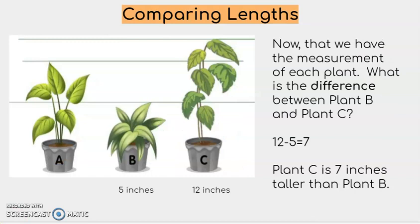Now you'll notice that we have the measurements for plants B and plant C. Plant B is 5 inches, while plant C is 12 inches long. So now that we have the measurement of each plant, what is the difference between plant B and plant C?